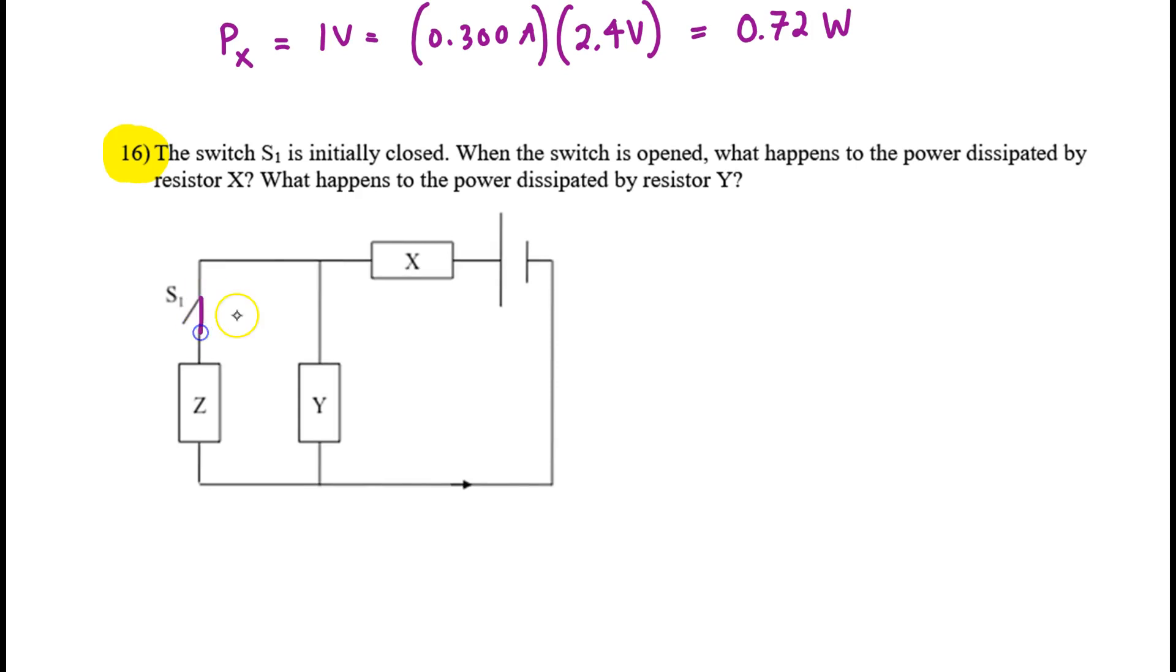Problem 16. The switch S1 is initially closed. And when it's closed, charges can go this way through that loop, and other charges can go like this through that loop. But then, suddenly, it's opened. And now, the only remaining path is this. What happens to the power dissipated by X? How about the power dissipated by Y? This is a tough question. First, we assume, and this should be stated, the EMF is constant and the resistance is constant for each of the three resistors. So when you flip the switch, the value of RX does not change. RY, same. RZ, same value.